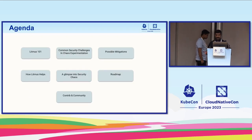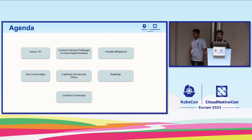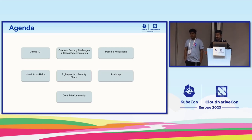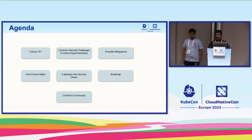So what we talk about today is: introduce Litmus in general, and some of the security challenges or considerations once you start implementing chaos engineering as a practice — what are the security challenges and possible mitigations around that, how to solve them. We take each of those five or six examples, and then my colleague Raj will actually demonstrate how you would do that. Depending on time, we'll talk about where Litmus is going and general guidelines on how you can contribute to the project.